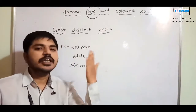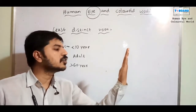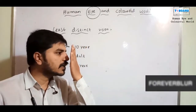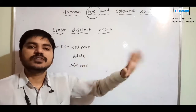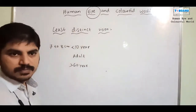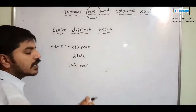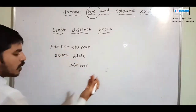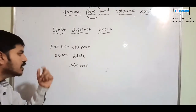To understand least distinct vision practically: bring your palm close to your eye and move it nearer — you cannot see it clearly below a certain distance. For children below 10 years, that least distinct distance is 7 to 8 centimeters. For young adults it is 25 centimeters.